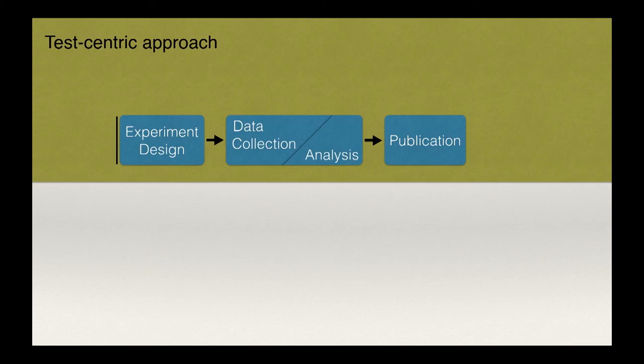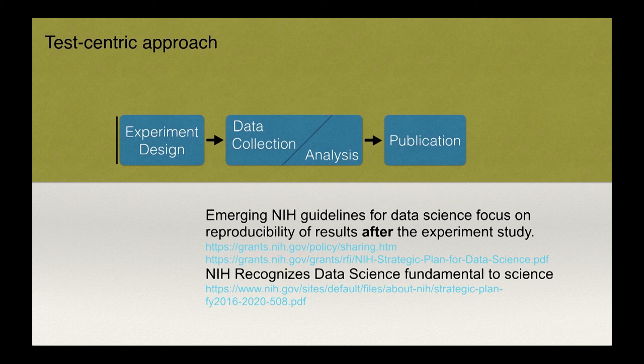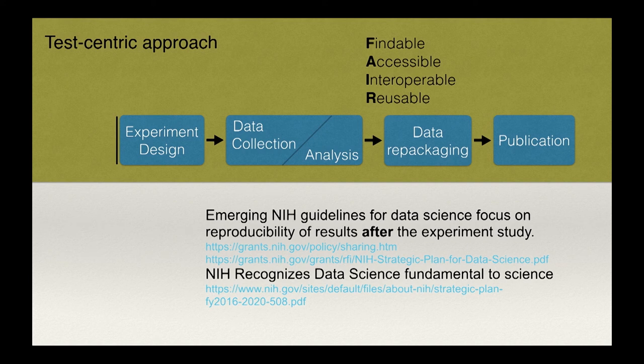There are problems with this approach. You may know about the reproducibility crisis. If you collect tons of data and find something, the data that did not produce a result never shows up — there's a selection process where only significant results get published. If you take many studies in neuroscience and try to reproduce them from scratch by running the entire experiment, sometimes the finding does not reproduce. The NIH is aware of this and is producing guidelines on good data science practices, increasingly requiring labs to publish data.